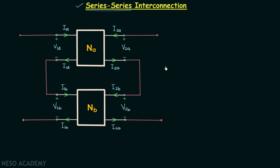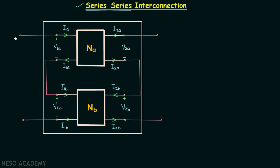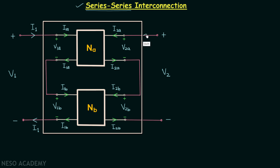When you observe carefully, you will find that network NA along with network NB are forming a larger two-port network. The input voltage of the larger two-port network is V1, and the output voltage is V2. The input current entering via this terminal is I1, and the same current will leave via this terminal. The output current is I2, entering via this terminal, and the same current will leave via this terminal.